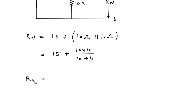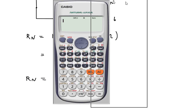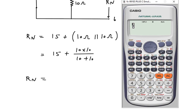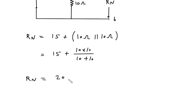Therefore, Rn is equal to 15 plus 10 into 10 divided by 10 plus 10. So it is 20. 20 ohm is the value for Rn.